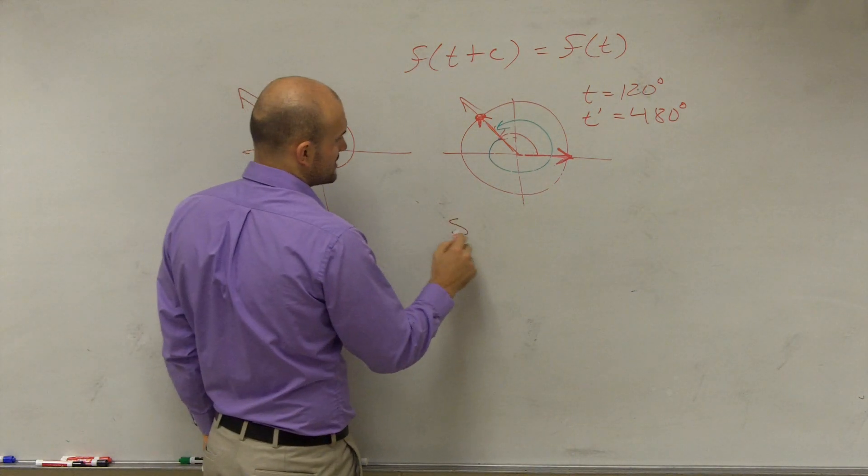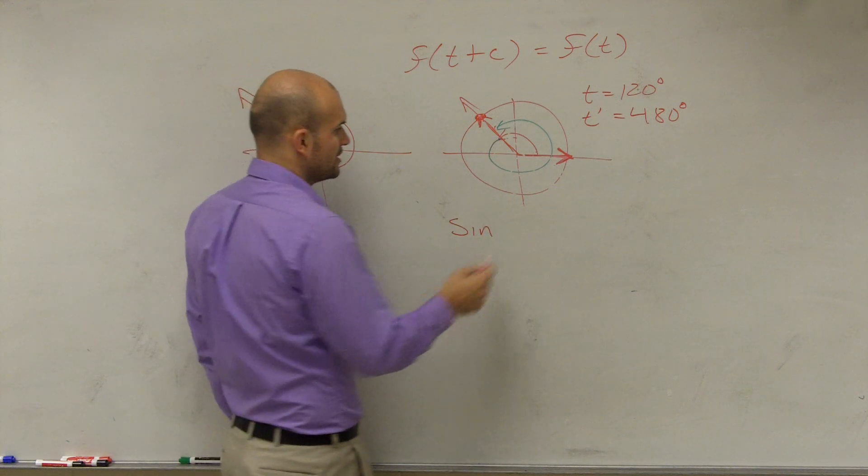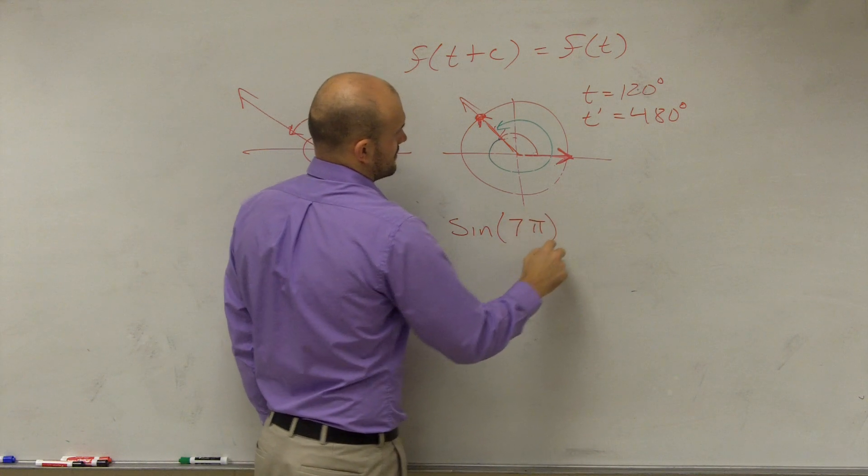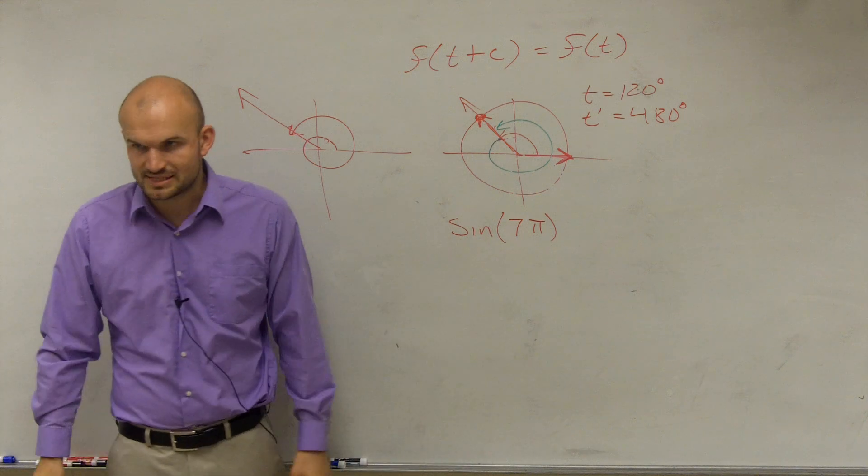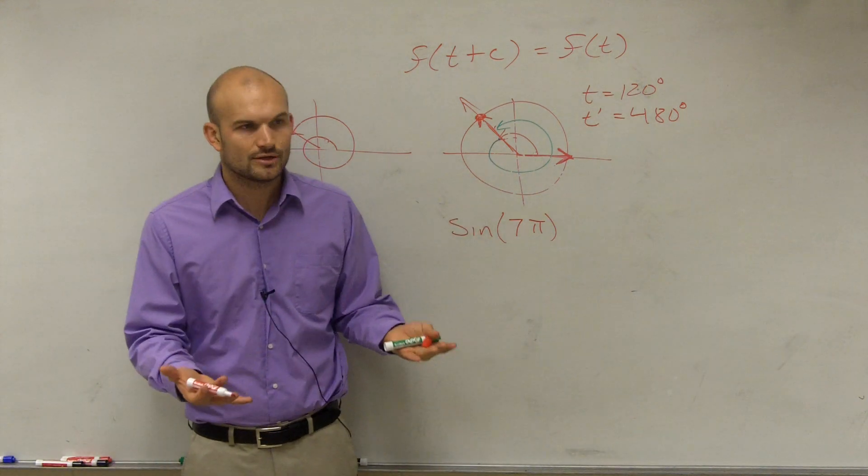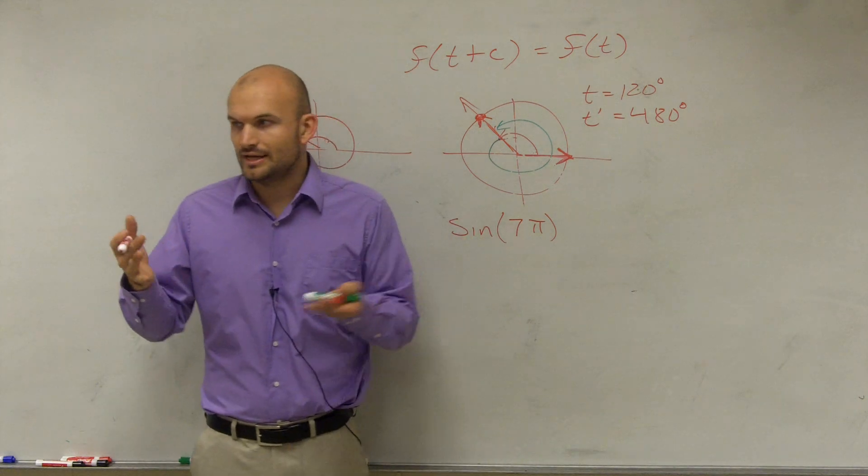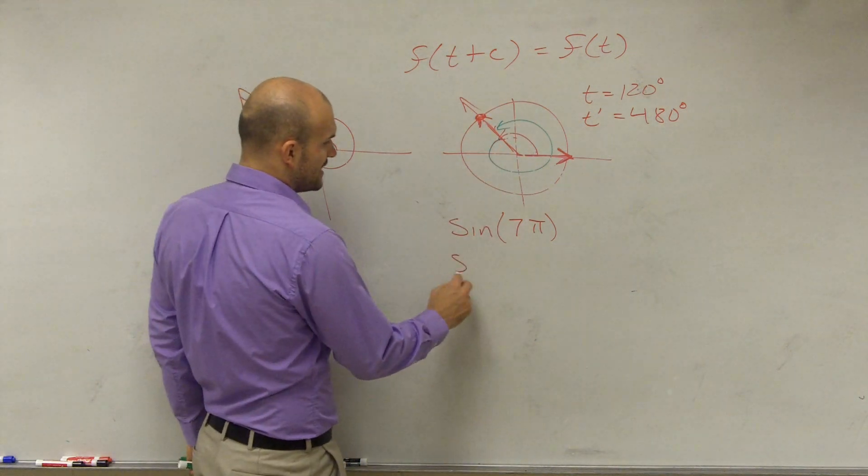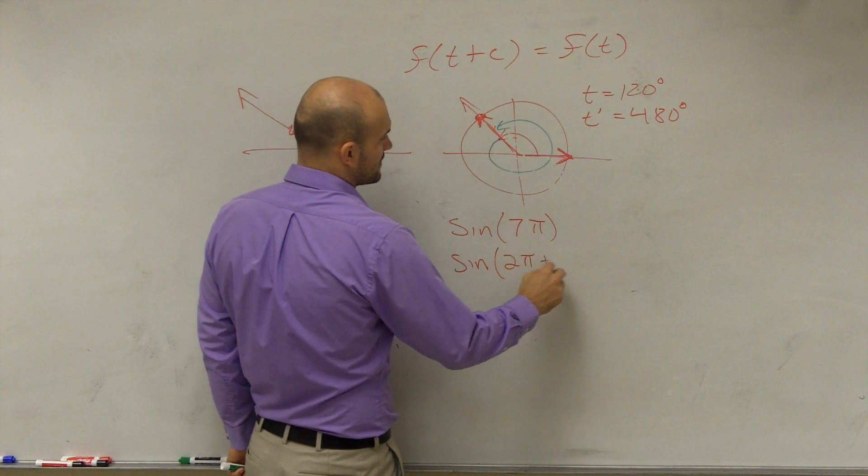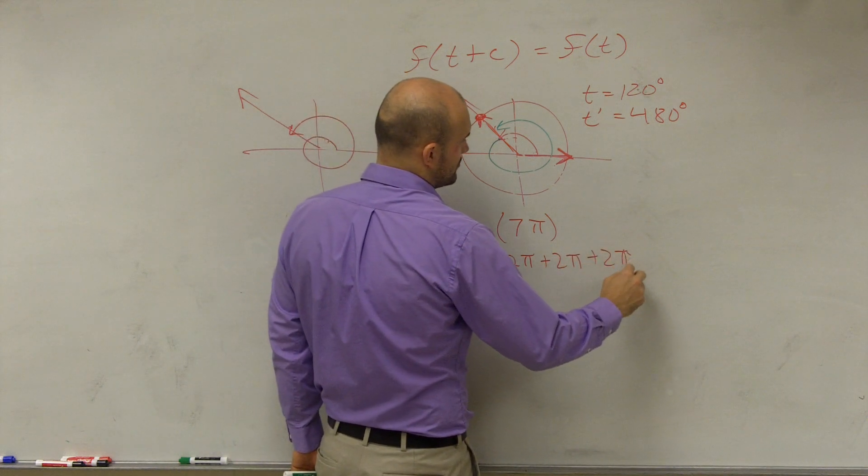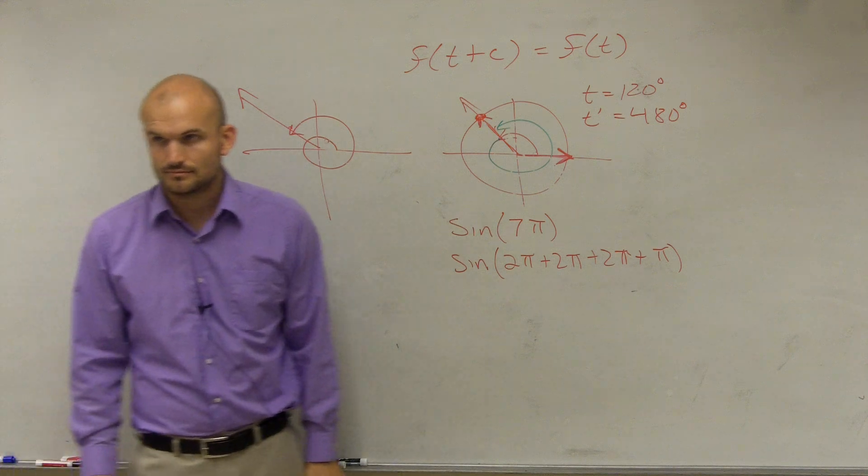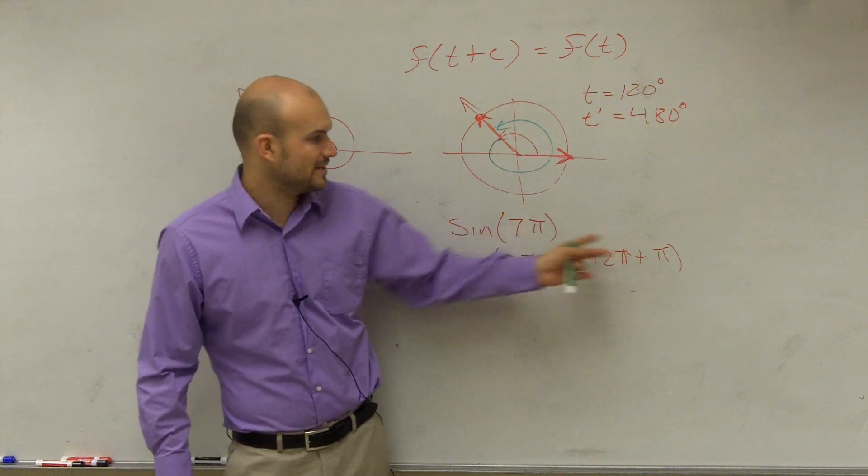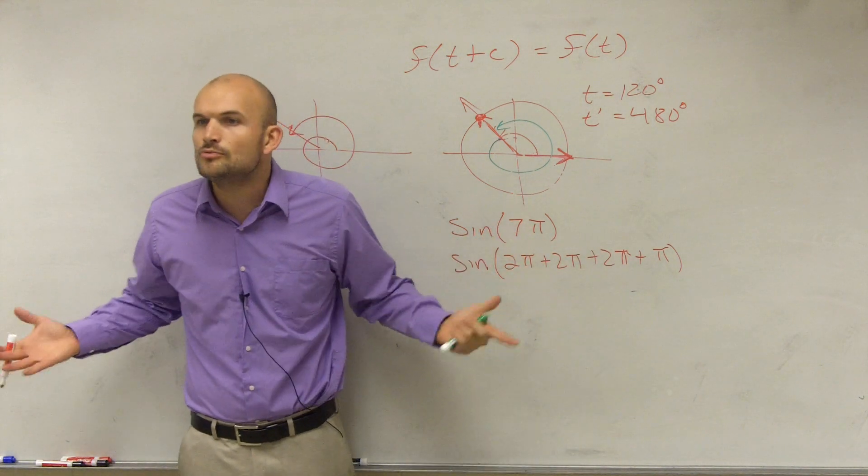Let's say I wanted you to evaluate sine of 7π. Remember, coterminal angles provide you with the same point, the same initial and terminal side. So I can write this as sine of 2π plus 2π plus 2π plus π. Do you see how 2π plus 2π plus 2π plus π equals 7π? Now what is that 2π doing to us though?